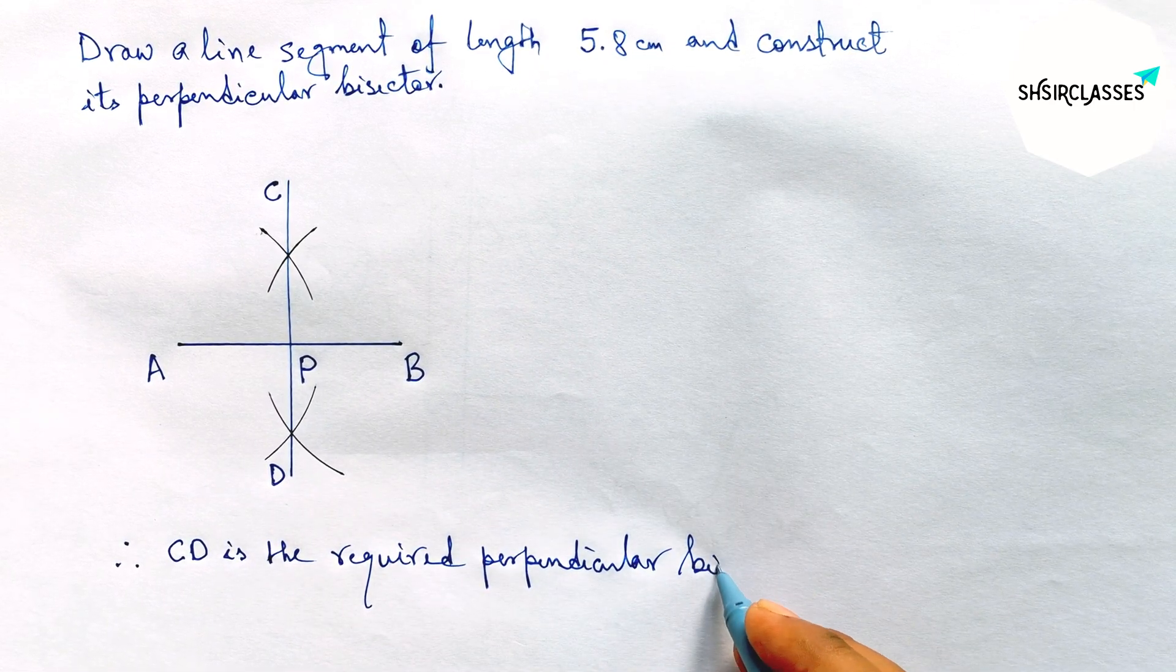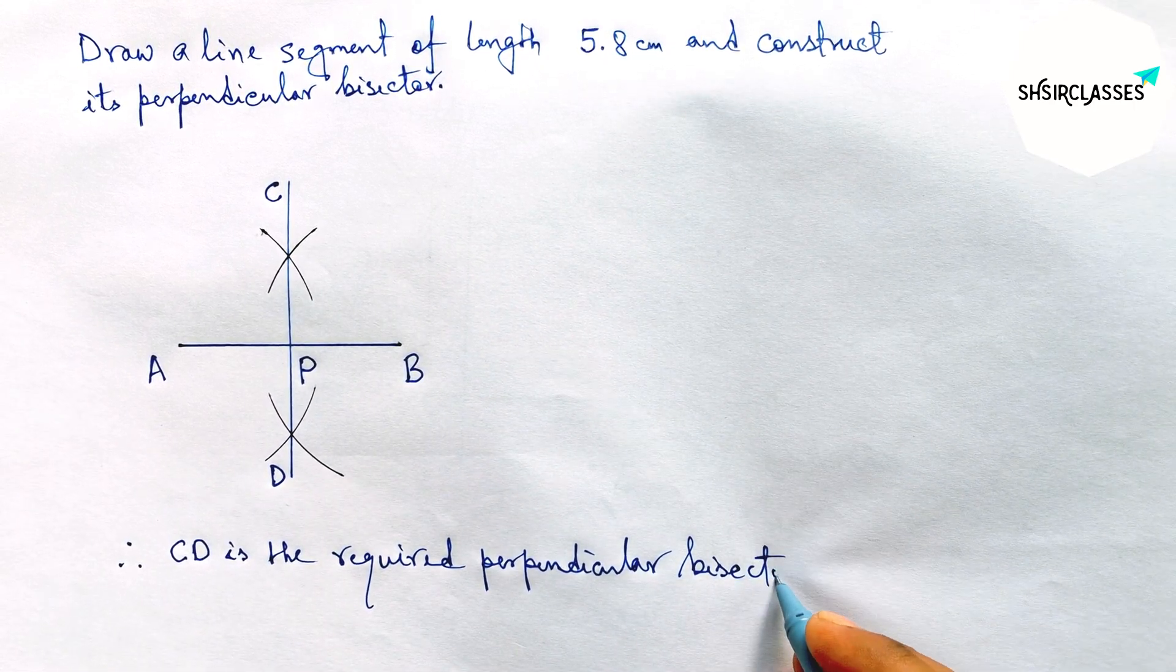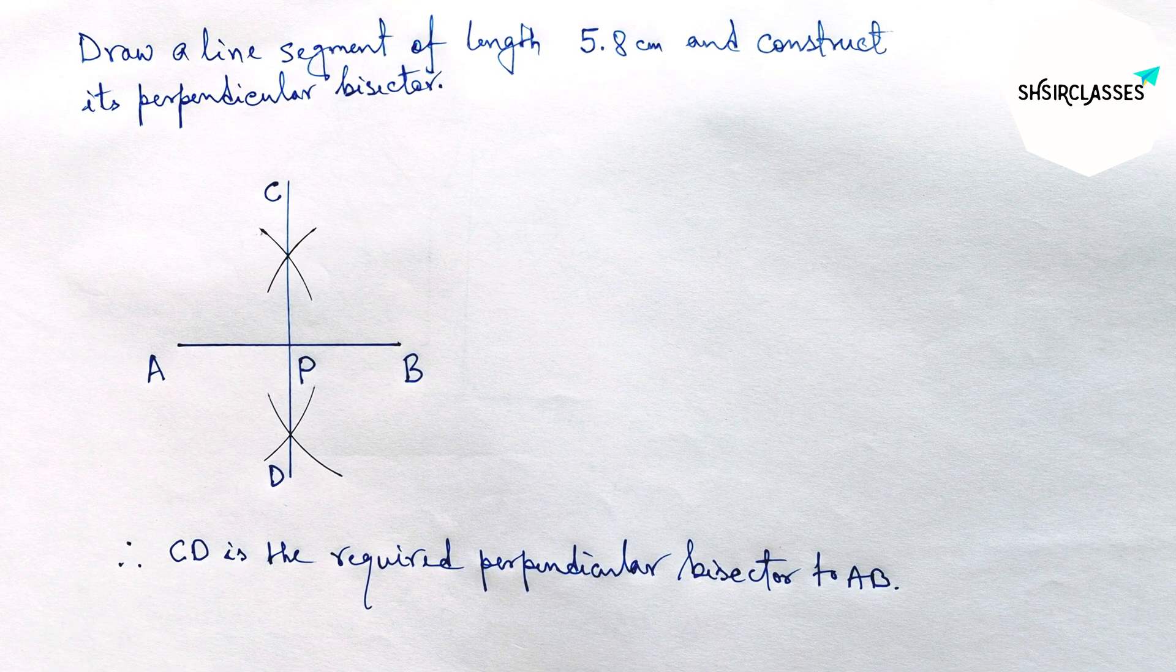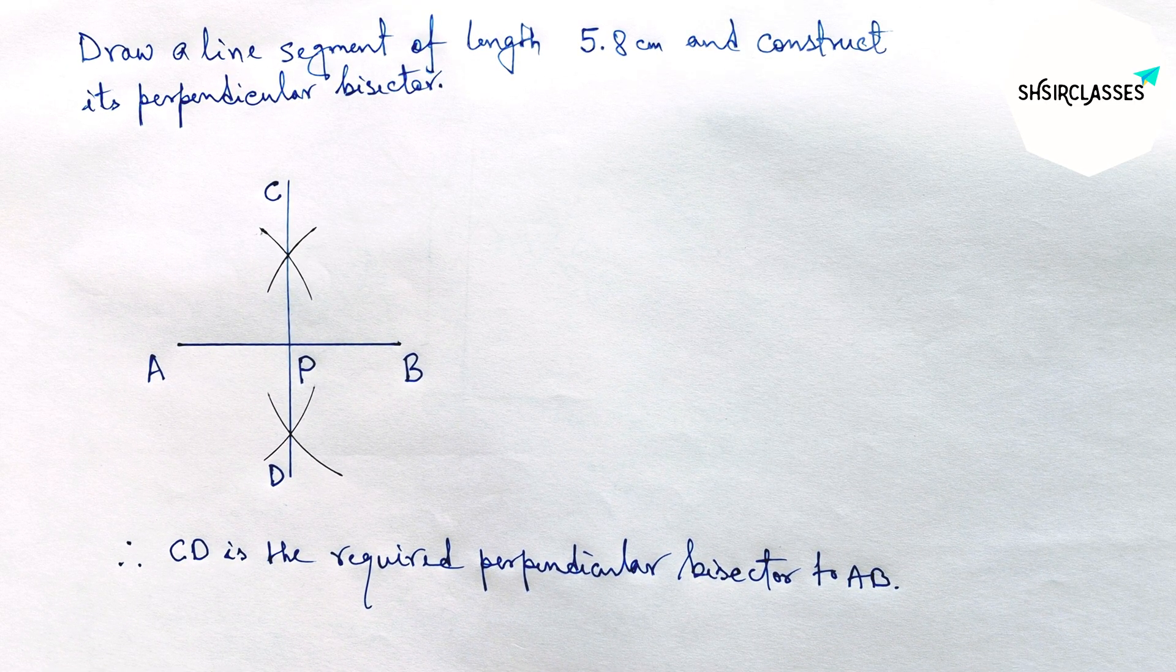And by this way you can construct a perpendicular bisector to a given line. So that's all. Thanks for watching. Please share it.